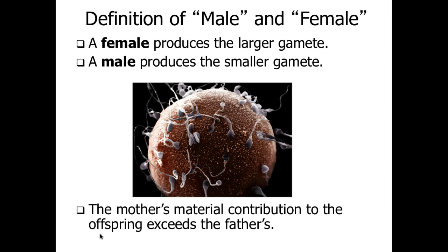If we look at the biological definitions of females and males, it has to do with the production of gametes. Females produce larger, less mobile gametes, and males produce smaller, far more motile gametes. This is the beginning stage of the differences in terms of parental investment.